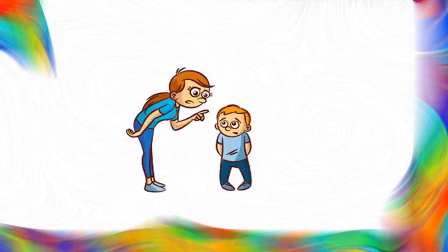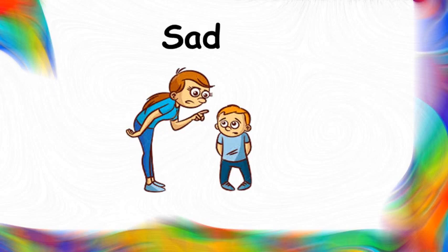What can you see? A mom is scolding her son. Look at this boy's face. How is the boy feeling? Is he happy? Is he excited? No. He is sad. Look at the boy's face — he is feeling sad because his mom is scolding him. So what feeling are we talking about in this slide? We are talking about the feeling sad. It's written here. Repeat after me — sad. Let us move on to the next slide to know about another feeling.